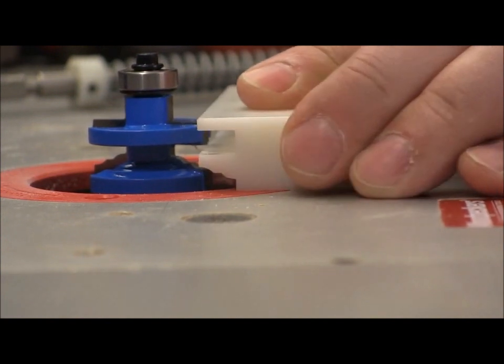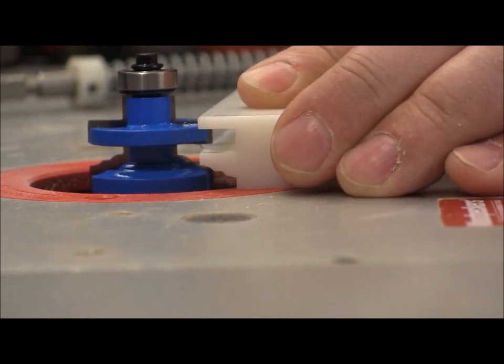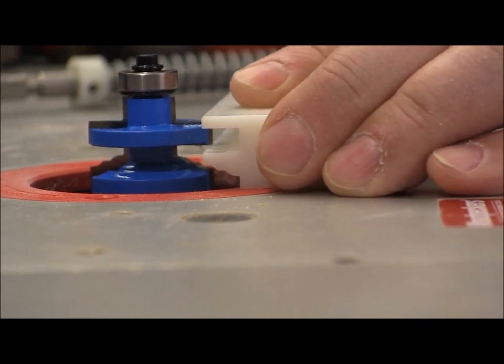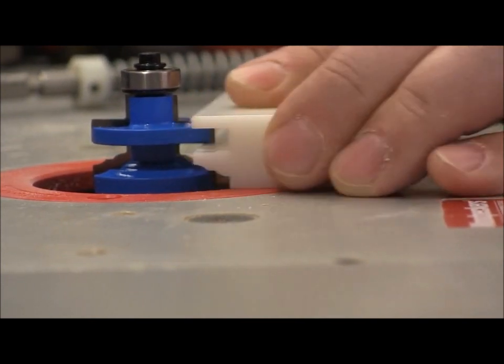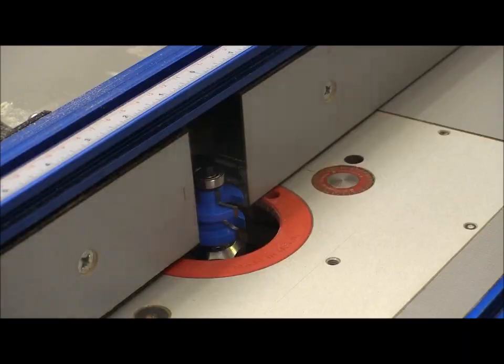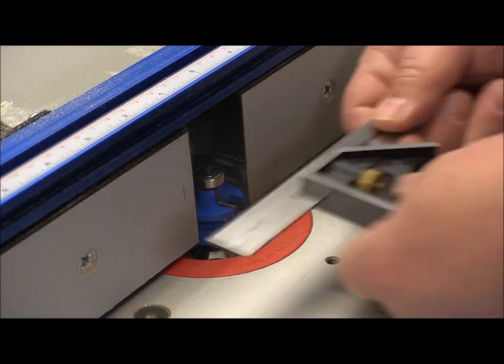When the bit has a bearing that controls the depth, we set that flush to the faces on the router fence. I always make a test cut to confirm the setup, but in every case with the Rockler router bit setup jigs the setup was perfect the first time around.